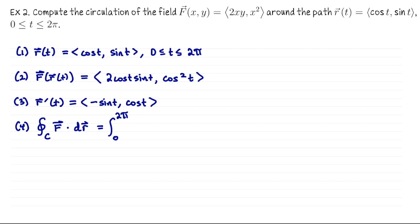It will be the integral from 0 to 2π of ⟨2cos(t)sin(t), cos²(t)⟩ dot ⟨-sin(t), cos(t)⟩, and then we integrate that with respect to t. Okay, let's do this dot product. We will have -2cos(t)sin²(t) plus cos³(t).